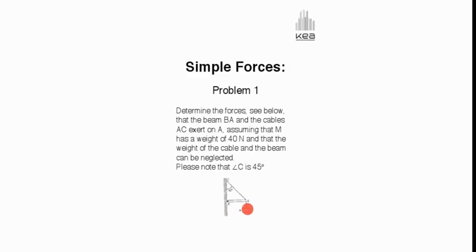And the mass M has a weight of 40 N. And we can assume that the weight of the cable and the beam can be neglected. Please note that angle C is 45 degrees.